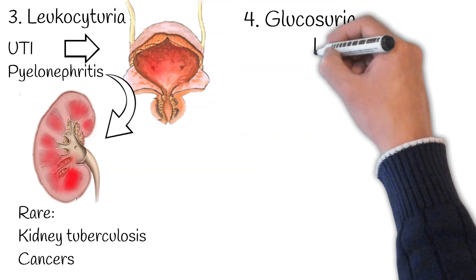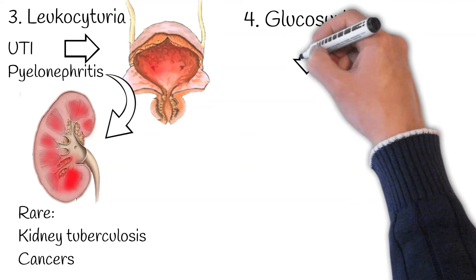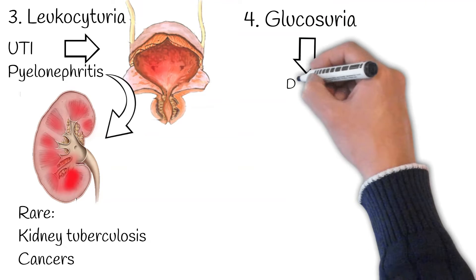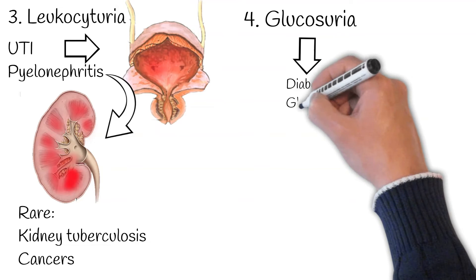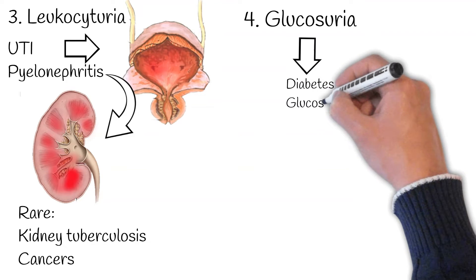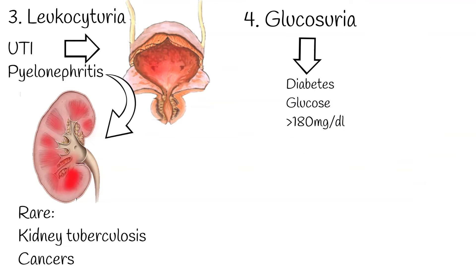Glucosuria is when glucose is present in the urine. It is usually caused by diabetes. Glucose levels must be at least 180 mg/dL in the blood before the kidneys excrete it in the urine, making glucosuria a strong predictor of diabetes.